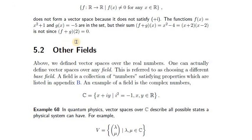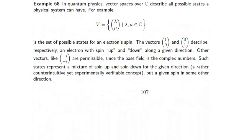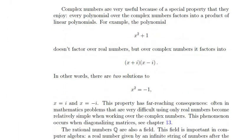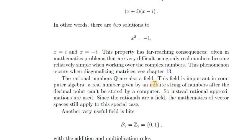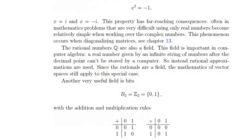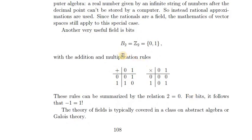In the previous section, we discussed scalar multiplication where we multiply vectors by elements of R. It turns out we can have different kinds of scalars. Instead of R, we can choose the complex numbers or the rational numbers as our set of scalars. The set of scalars needs to satisfy some properties called the field properties: Q and C both have addition and multiplication, and they have inverses — except that zero does not have a multiplicative inverse. That's basically what a field is. Throughout this course, we'll mostly be working with the field R.